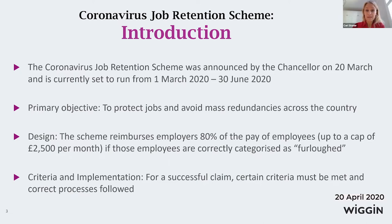For a successful claim, you need to meet certain criteria and follow the correct processes set out in the Treasury's direction and guidelines. The eligibility criteria must be met, and the process of informing furloughed employees must be addressed. For those who are self-employed or members of a partnership who have lost profits due to COVID-19, there is a separate Self-Employed Income Support Scheme available, which we are covering in a separate webinar tomorrow.